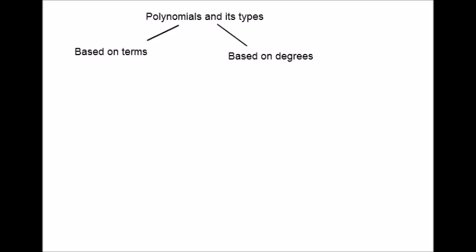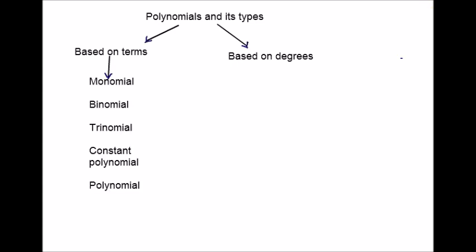Types of polynomials are divided on the basis of the degree and the basis of the terms. Based on terms, polynomials can be divided into five types. These are the five types of polynomials based on terms. The name itself will explain you what type of polynomial it is.